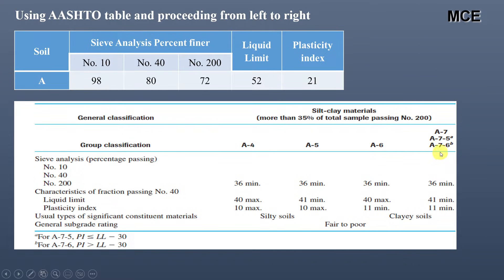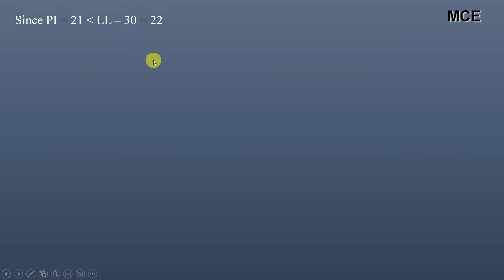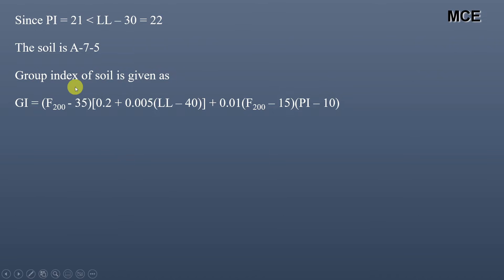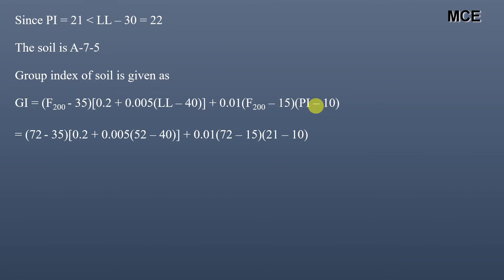Next we determine whether it is A-7-5 or A-7-6. The plasticity index is 21, which is less than the liquid limit minus 30, which equals 22. It means our soil is A-7-5. We then find the group index using the formula where F200 is the percentage passing sieve number 200, LL is the liquid limit, and PI is the plasticity index. Putting in the values, the group index comes out to be 15.89, which rounds up to the next whole number: 16.